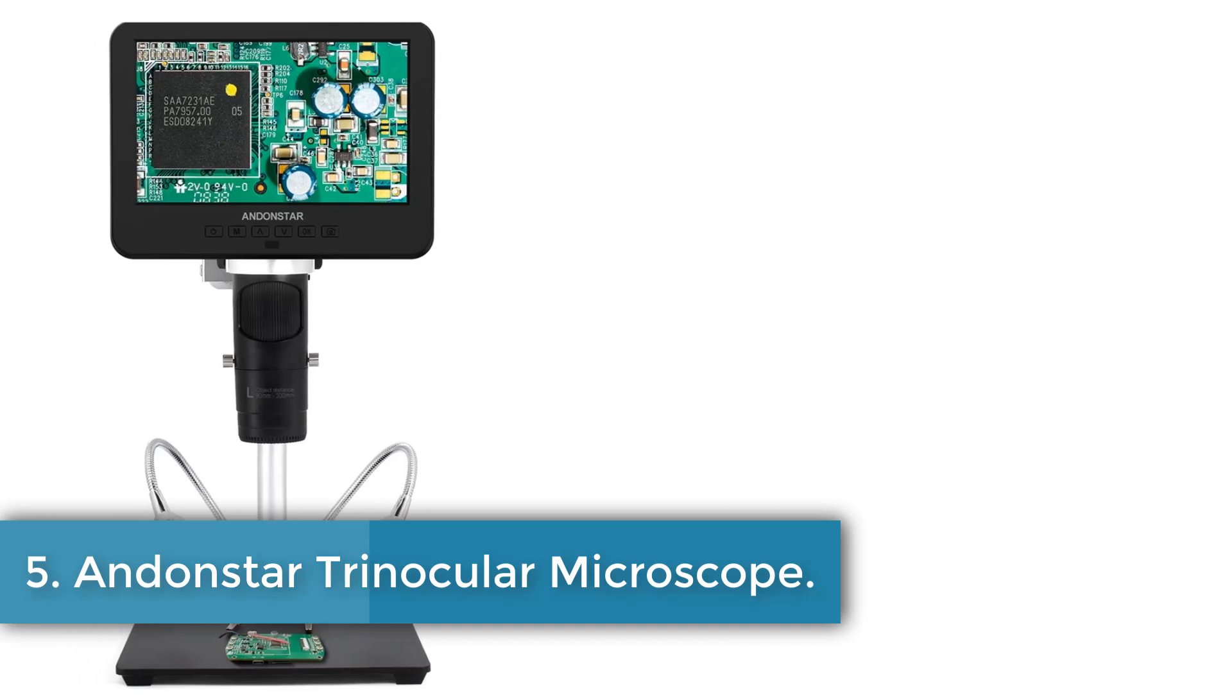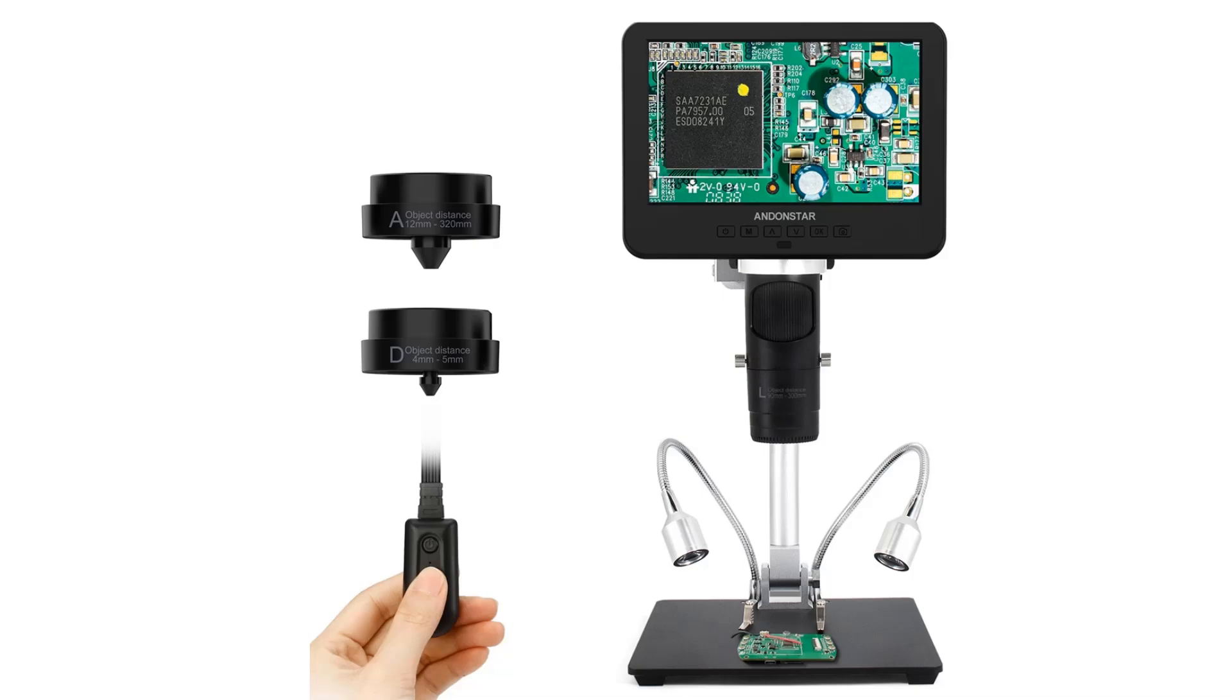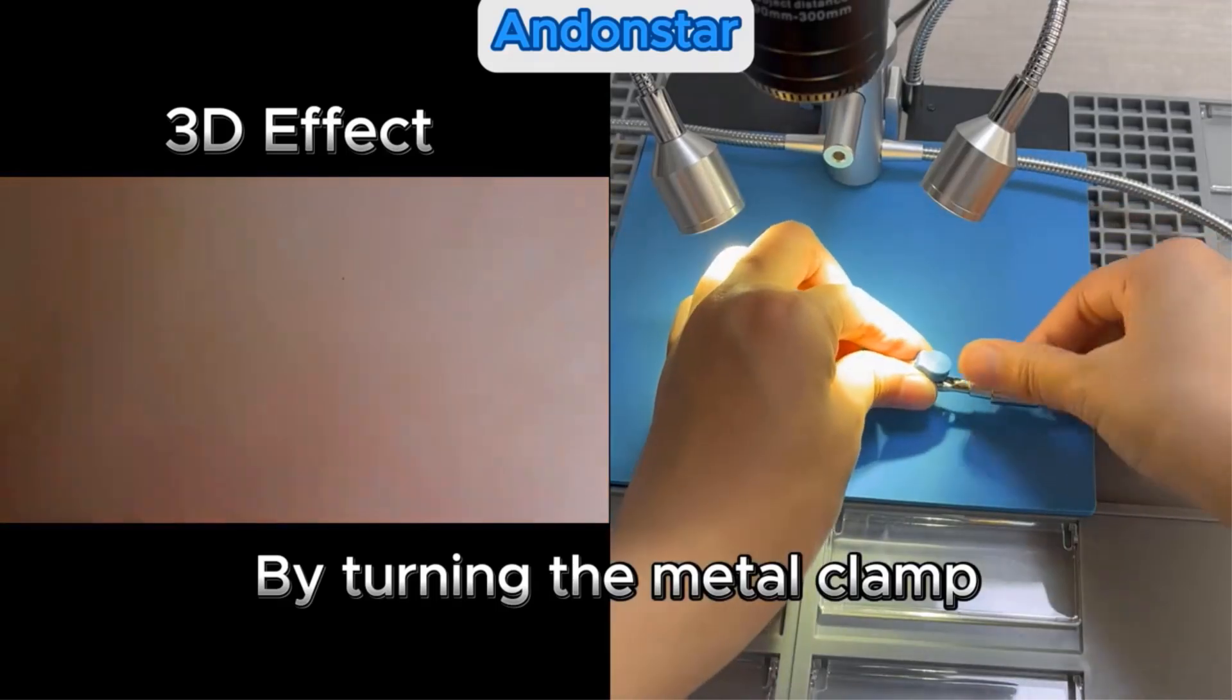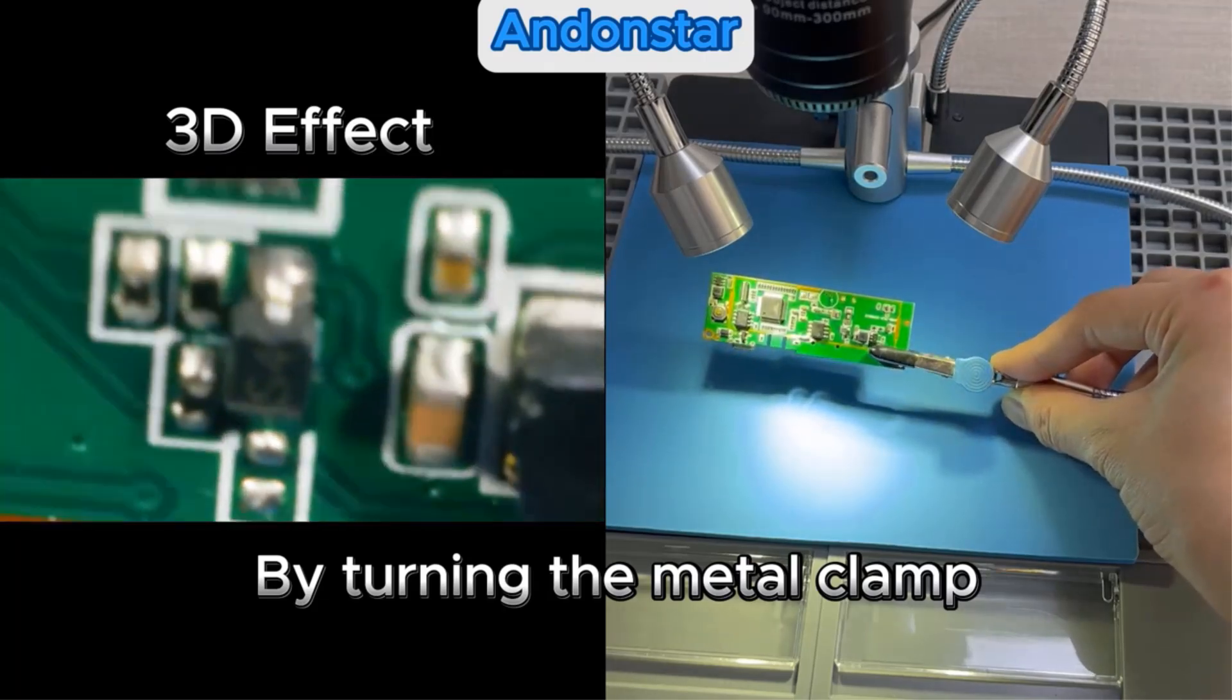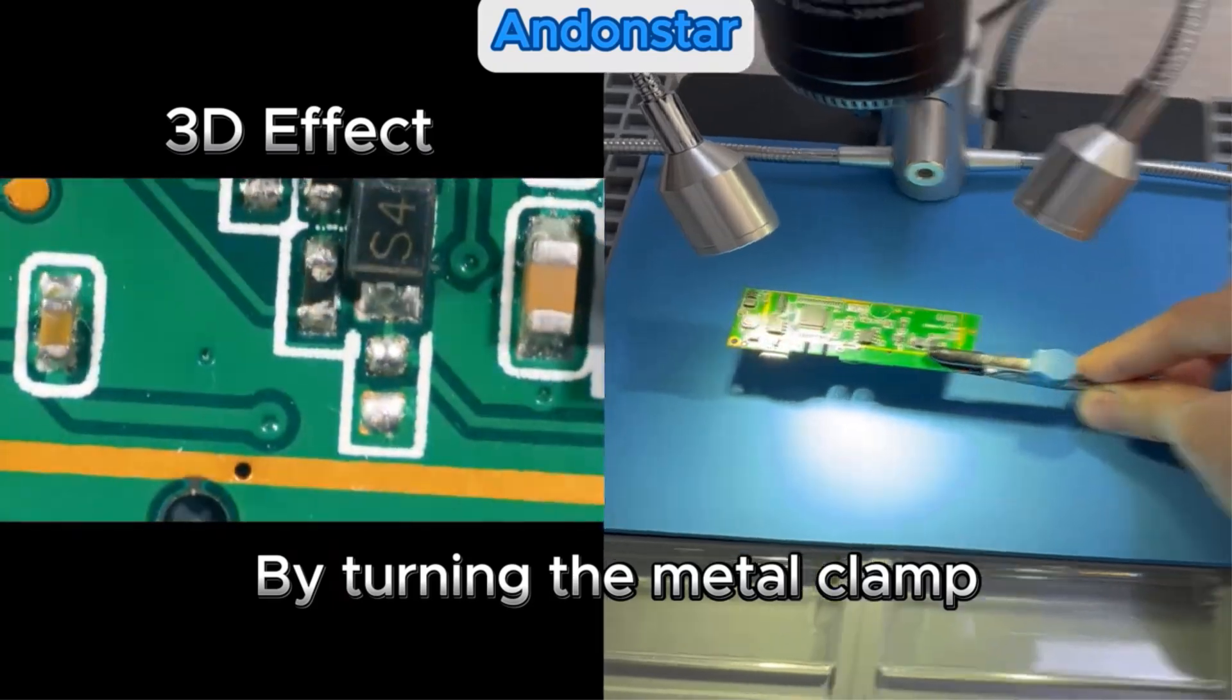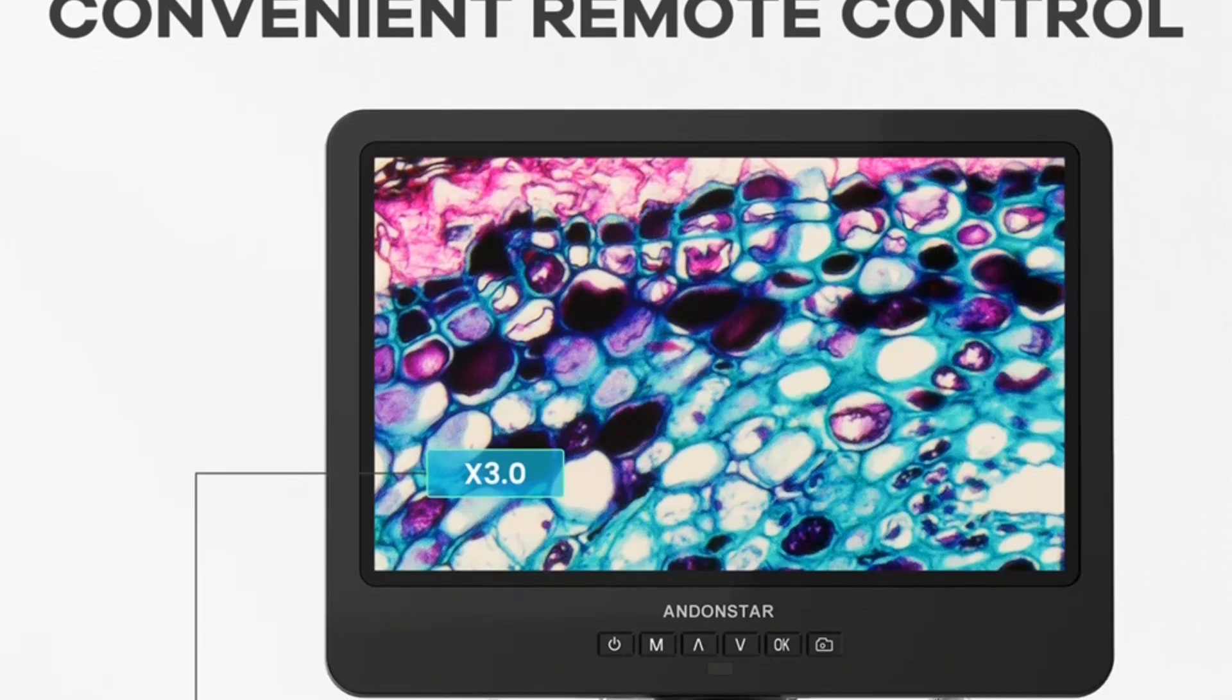Number 5: Andonstar Trinocular Microscope. The Andonstar AD249SM Plus is a high-definition video microscope designed for various applications, featuring a trinocular drawtube and a magnification ratio ranging from 1500x to 3000x, depending on the lens used. Built from durable metal and certified by CE, FCC, and ROHS, this portable microscope is ideal for both professional and personal use.